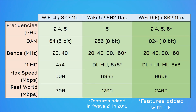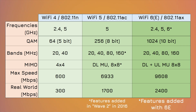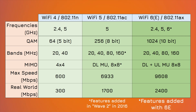Wi-Fi 6E added a whole new frequency — 6GHz — so there are now 2.4, 5, and 6GHz signals, for a theoretical maximum of 9.6 gigabits per second, although realistically that's more like 2.4 gigabits per second max. Wi-Fi 6 also added uplink support for MU-MIMO, so now traffic going both ways can use multiple antennas for faster transfers.